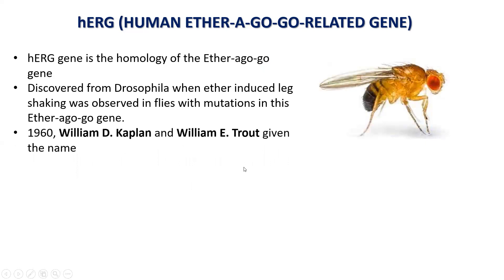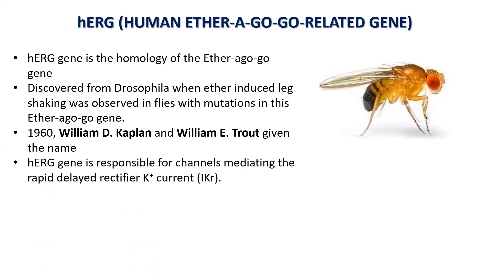In 1960, William D. Kaplan and William E. Trout used the name ether-a-go-go gene. The HERG gene is responsible for channels mediating the rapid delayed rectifier potassium channel. This HERG gene is mainly associated with the action potential part of the cardiovascular system where repolarization takes place, and it is mainly concerned with the potassium current that is IKR.